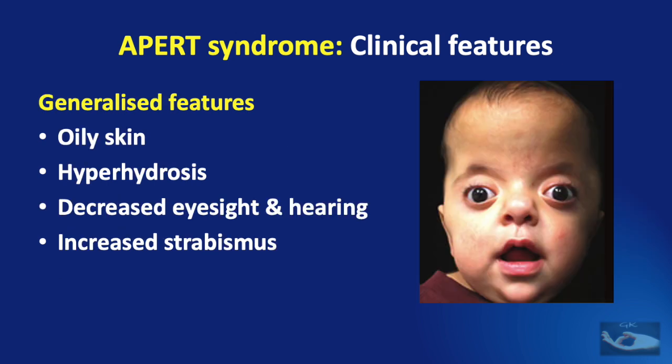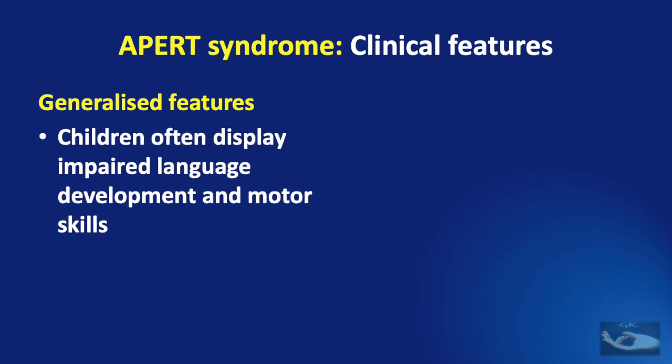The generalized features of Apert syndrome include oily skin, hyperhidrosis, decreased eyesight and hearing, and increased strabismus. The affected children often display impaired language development and motor skills. The level of function depends more on their intellectual capacities than the severity of the extremity involvement, but most Apert children are capable of self-care over 5 years of age.